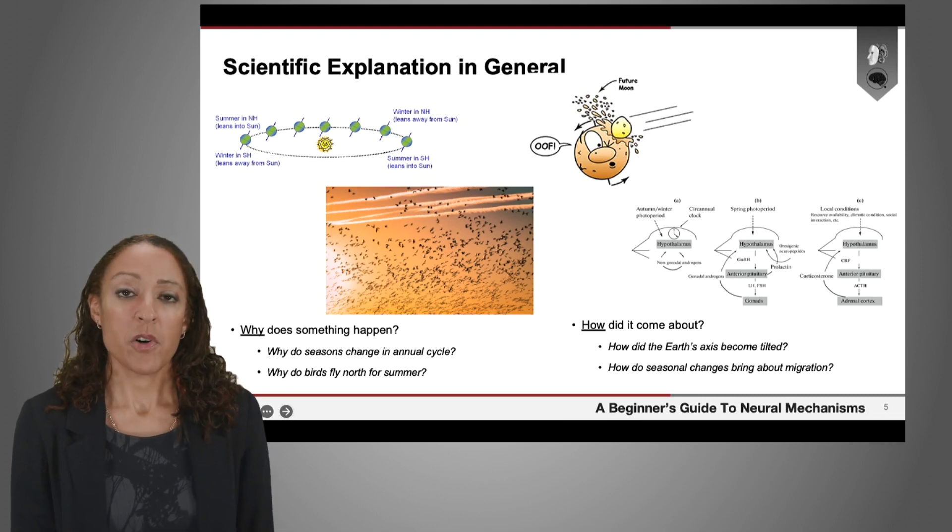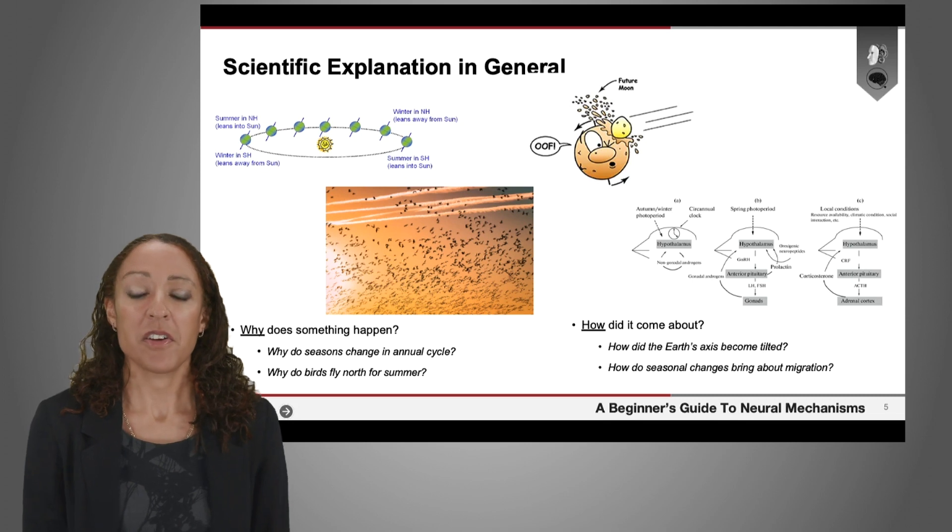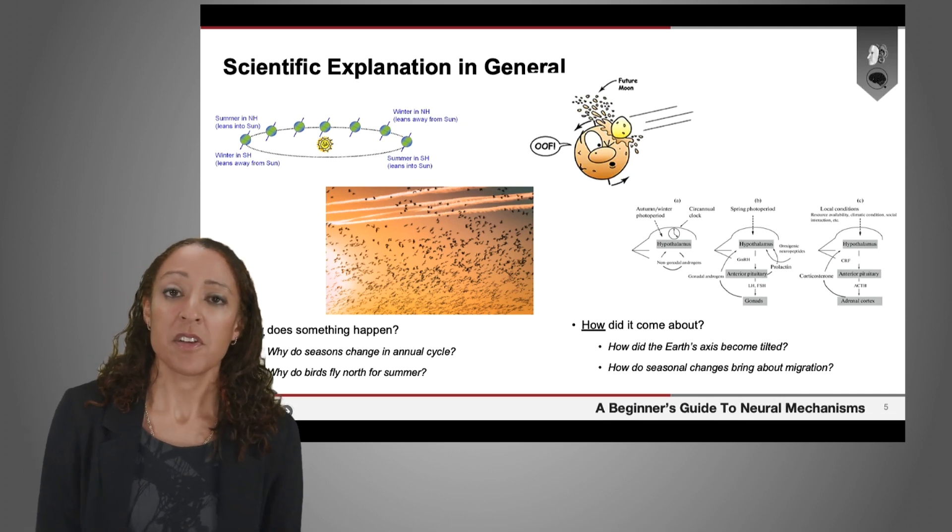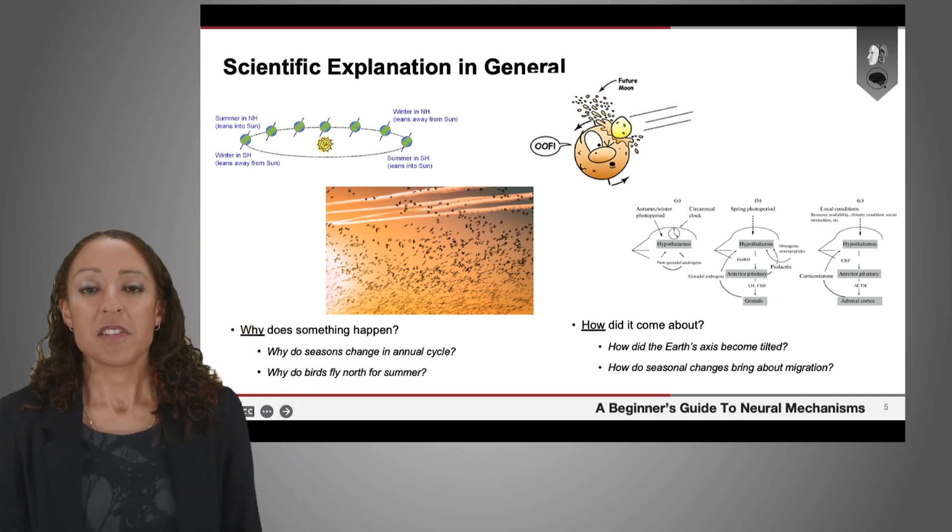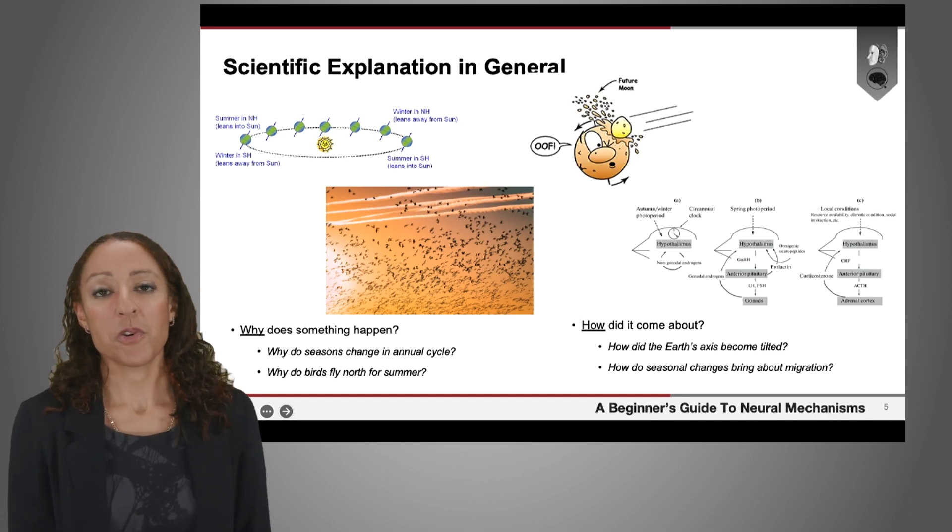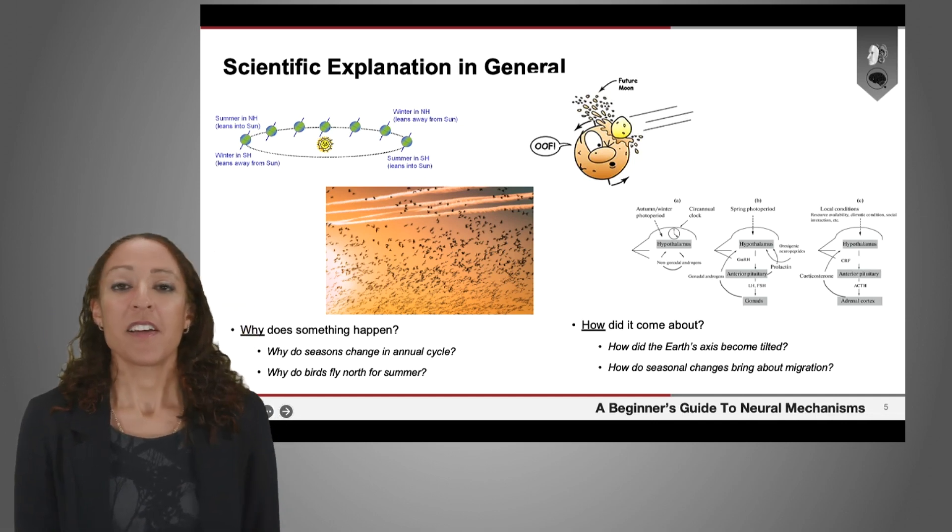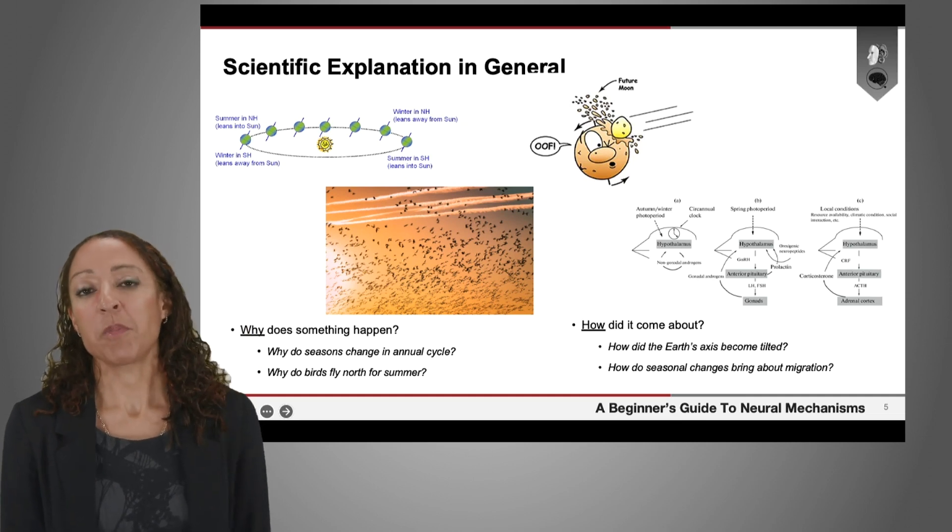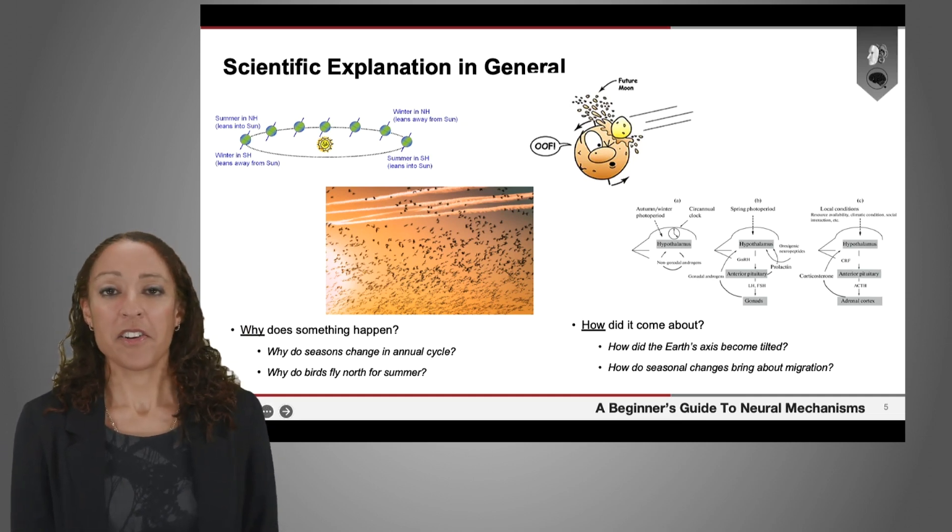But also you can ask the question, well, how does it happen? How did it happen in the past that the Earth's axis became tilted? And there's this explanation which goes back into the deep history of the Earth, which talks about a collision between the celestial body that later became the Moon and an early form of the planet Earth, which tilted the Earth off its axis.